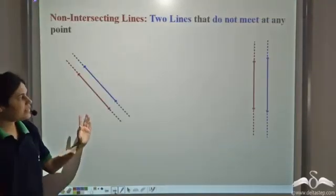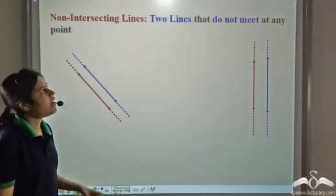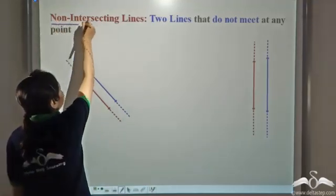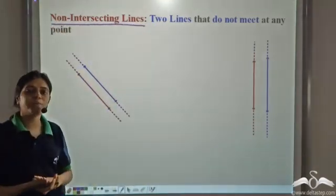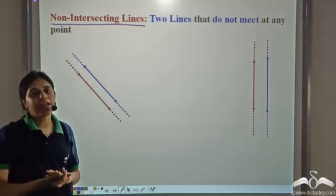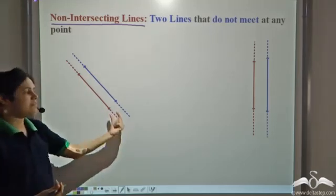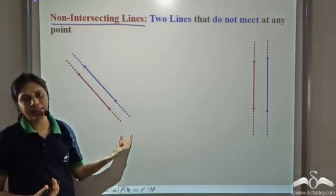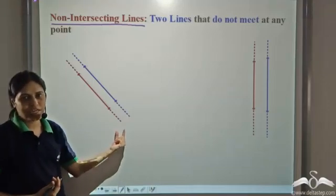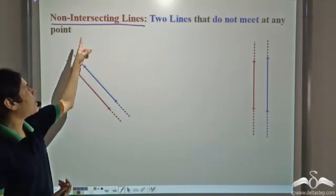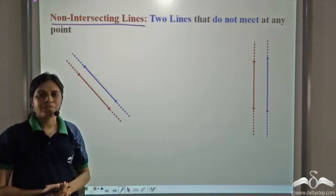Lines which do not meet are called non-intersecting lines. They do not meet at any point — no matter how much you extend them in any direction, they will never meet. Such lines are called non-intersecting lines.